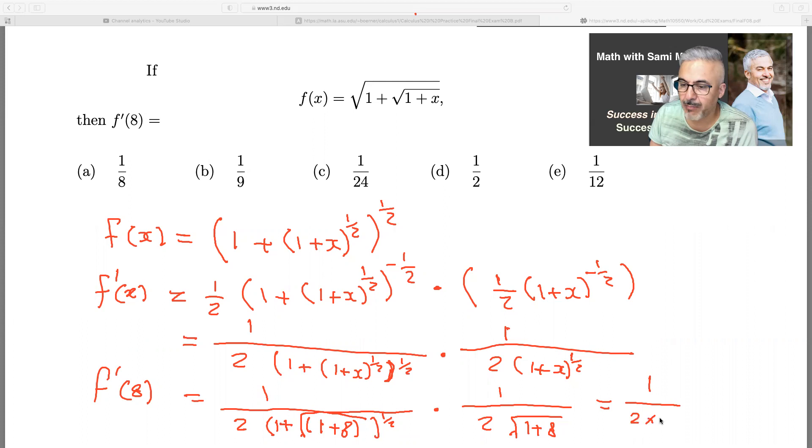Times one over. I'm subbing in. It already subbed in eight there. So eight plus one is nine. Square root of nine is three.